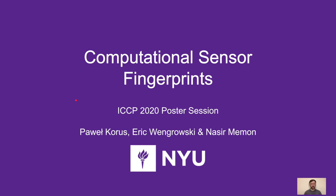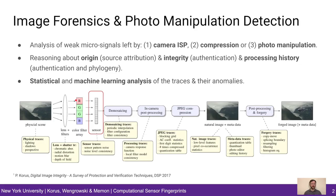Hi, my name is Paweł. I'd like to share some of our most recent research results at the intersection of computational photography and image forensics. Image forensics involves analysis of microsignals left by the camera ISP, lossy compression, or photo manipulation. Analysis of these traces allows to answer questions about the origin, integrity, and processing history of digital photographs.